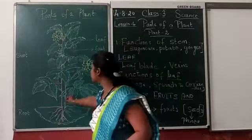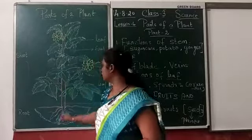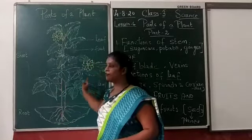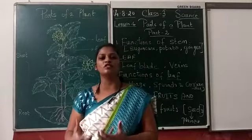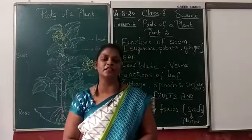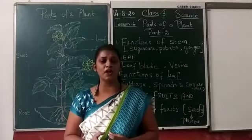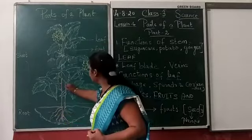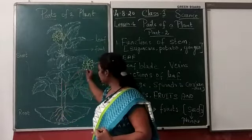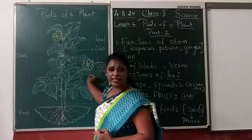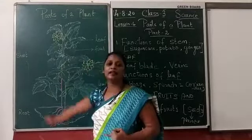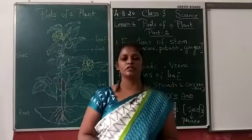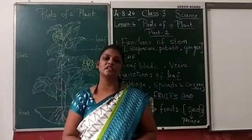Next, stems are the strongest — they can bear leaves, fruits, flowers, and so many seeds. So many things उसके ऊपर grow होते हैं। Stem इतना strong होता है कि it can bear — उसके ऊपर आप leaf देख सकते हैं, stem की ऊपर आप देख सकते हैं। Leaves, खूट — इतना सारा stem के ऊपर होता है। So these are the functions of stem.